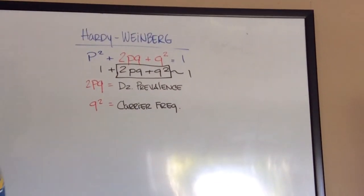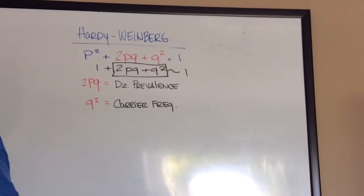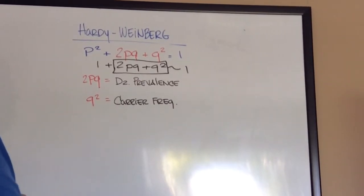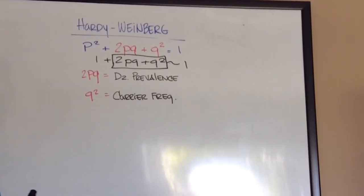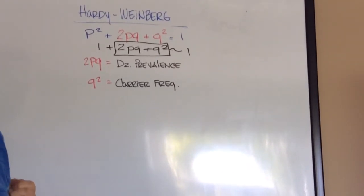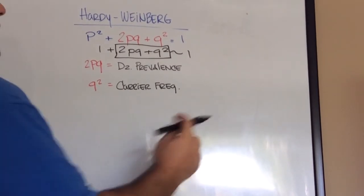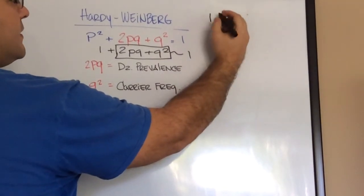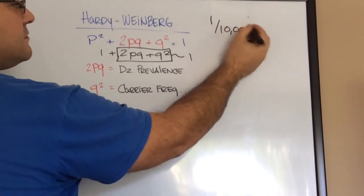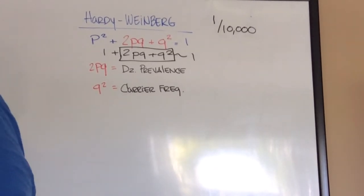And in a question, they're going to give you one or the other. So what are they? 2pq is disease prevalence, and q² is the carrier frequency. So in a question, they'll give you a certain disease, like let's say sickle cell disease, has a disease prevalence of 1 in 10,000. Let's just say, just for numerical sake, let's just say it's 1 in 10,000.